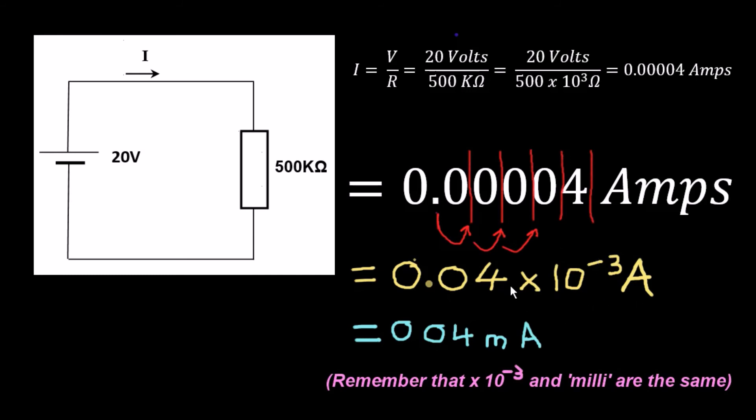But remember, 10 to the power minus three amps is milli-amps. So remember that 10 to the power minus three and milli are the same. So I can replace this 10 to the power minus three with milli-amps. And that's how you would convert from amps to milli-amps.